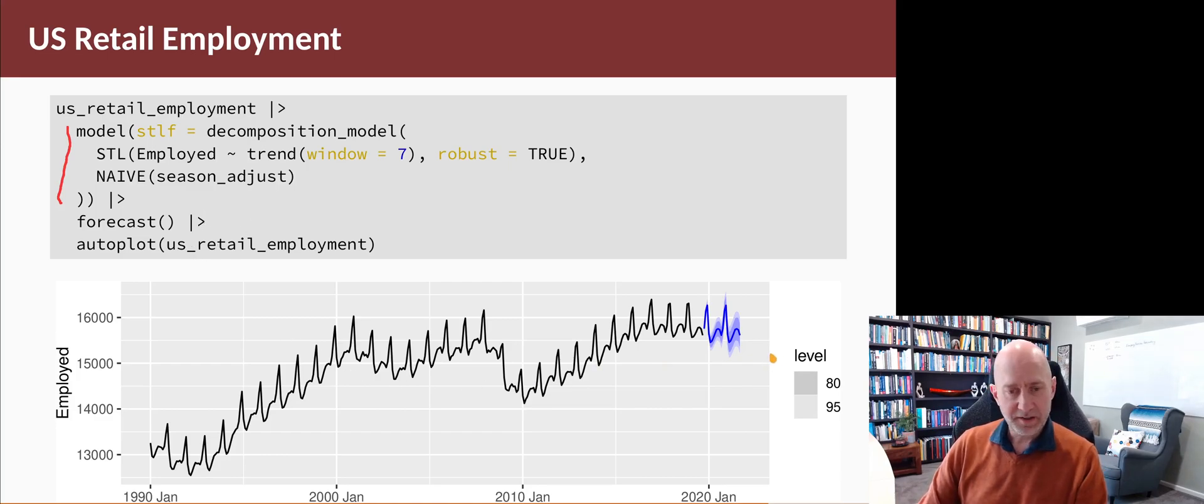When we look at the plot, you see it actually looks pretty good. The last observed values are here, and because we've used a naive on the seasonally adjusted data, it's pretty much picked up what it looks like towards the end of the series and pushed that forward. The seasonal pattern at the end has also been replicated in the first few forecasts.